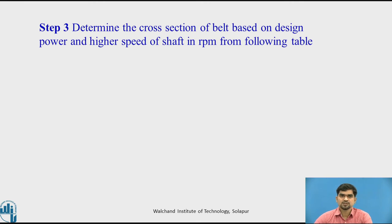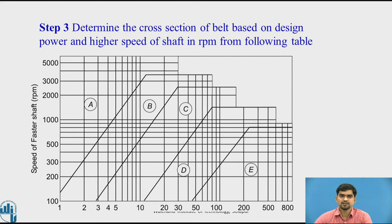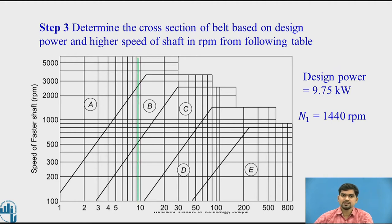Step 3: determine the cross-section of the belt based on design power and high speed of the shaft in RPM from the following table. We have to find out the section of the belt. There are 5 sections of belts available: A, B, C, D, and E. From those sections we have to find out the appropriate cross-section for our application. The horizontal axis indicates the design power and the vertical axis indicates the speed of the faster shaft. With design power 9.75 kilowatt and speed of the faster pulley 1440 RPM, we project this vertical line.